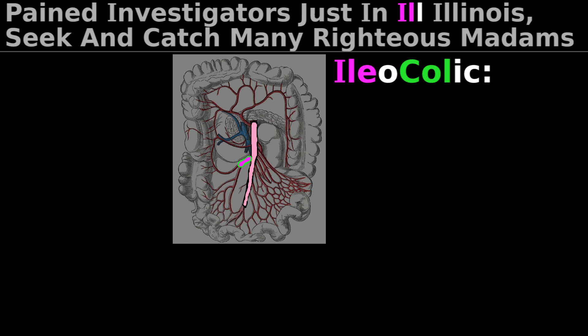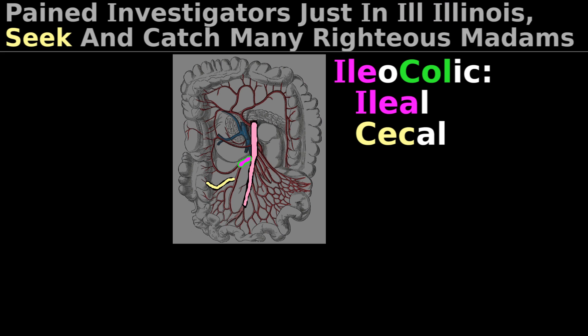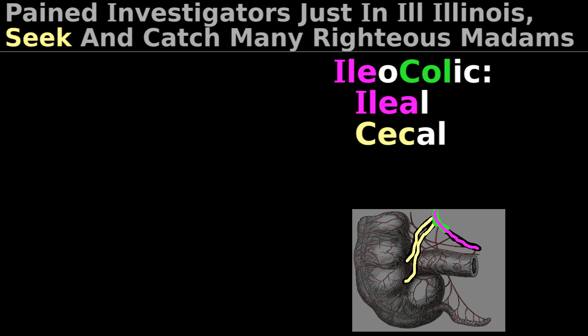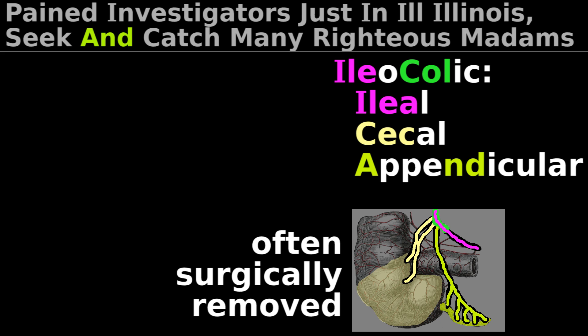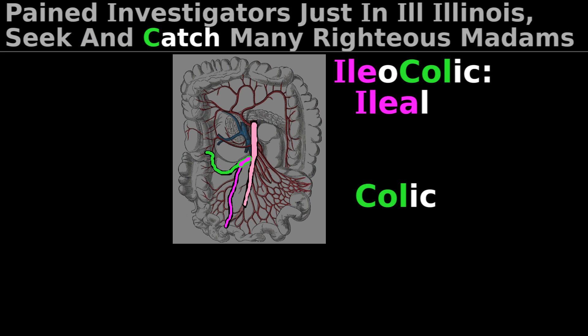The ileocolic artery has many branches. There is an ileal branch and a cecal branch of the ileocolic artery, which goes to the cecum — a pouch at the start of the large intestine. There is an appendicular branch of the ileocolic artery which goes to the appendix, and the appendix is often removed during surgery. Finally, there is a colic branch of the ileocolic artery.